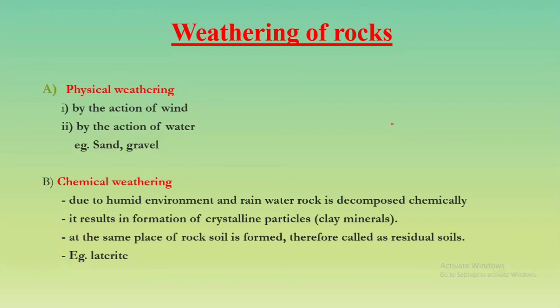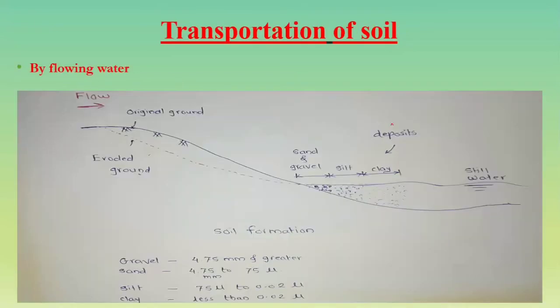In chemical weathering, the soil is formed at the same place as the rock, so these soils are called residual soils. An example is laterite. In laterite, due to rainwater, the soluble minerals in the rock are removed and some insoluble minerals like hydroxides of iron and aluminium remain, forming the soil. Therefore the color of laterite is red-brown.